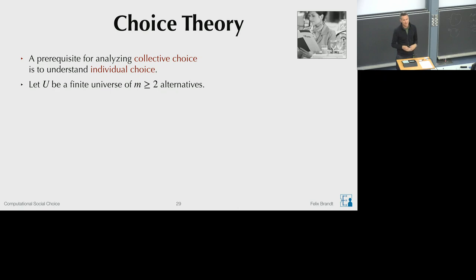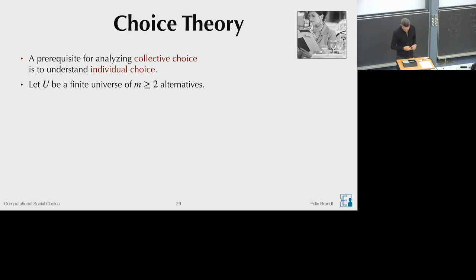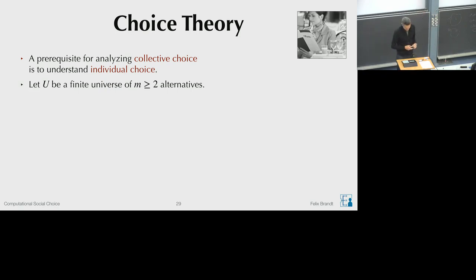The framework is as follows. We have a set U, a universe of alternatives — all the possible alternatives that we could eventually make a choice from. We assume there are at least two of these. Various alternatives are offered in the form of a menu, like a menu in a restaurant where there are different dishes. One running example: a dessert menu with three different desserts A, B, C — apple pie, brownies, and crème caramel.